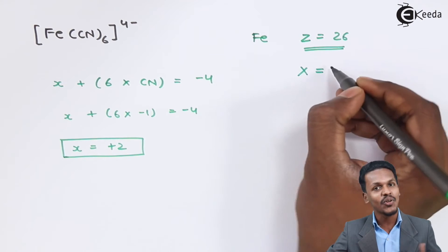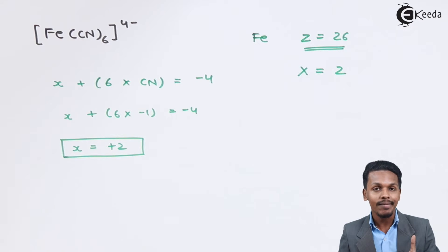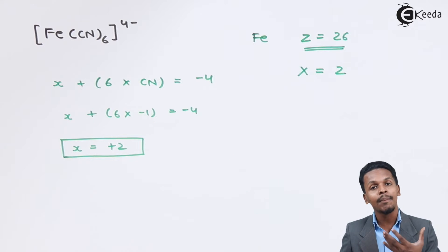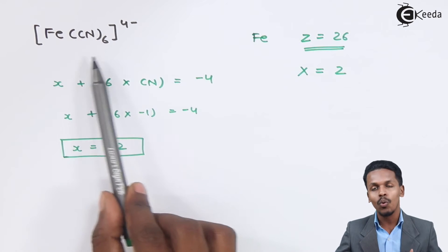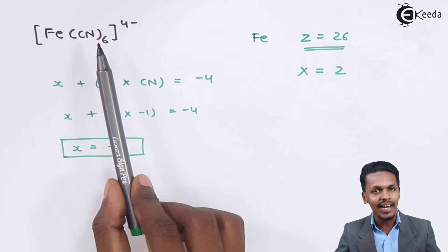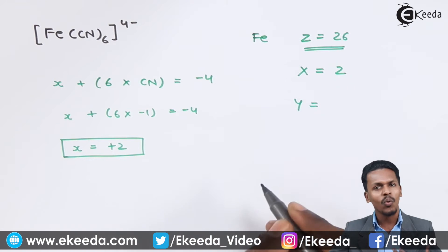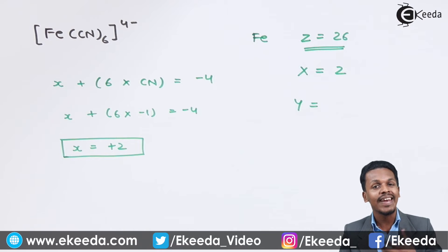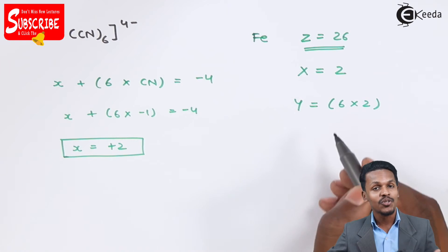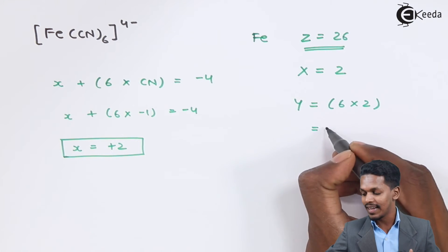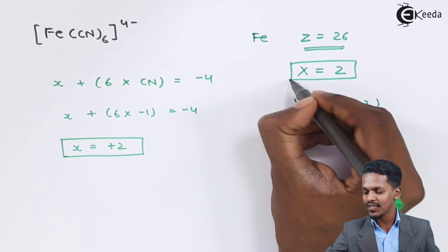So the value of X is 2. Now we need to calculate Y — the number of electrons donated by the ligands to the central metal atom. There is only one type of ligand: six cyanide ligands. Each cyanide shares an electron pair with the central metal atom, so six cyanides share two electrons each, giving Y a value of 12.